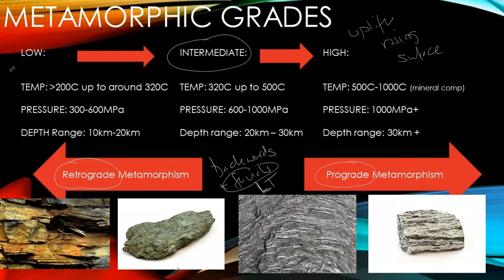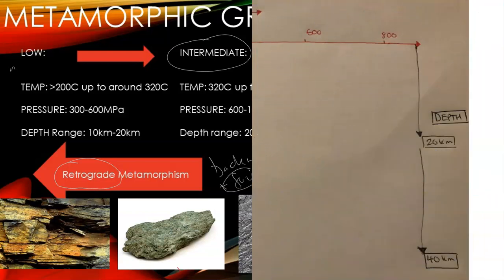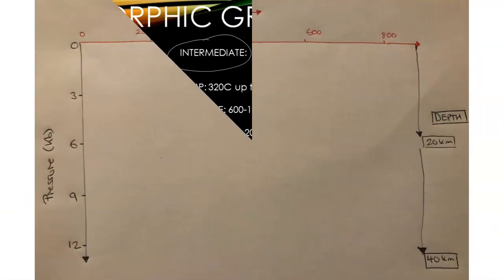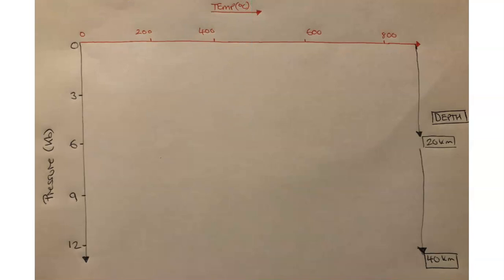The addition of fluids at a lower temperature would be retrograde metamorphism. If you put this information onto a graph, the axes are: temperature along one axis, pressure in kilobars — an altered unit from megapascals — and also depth.